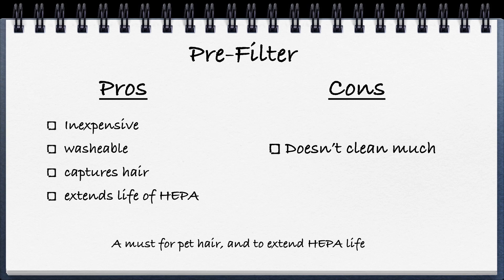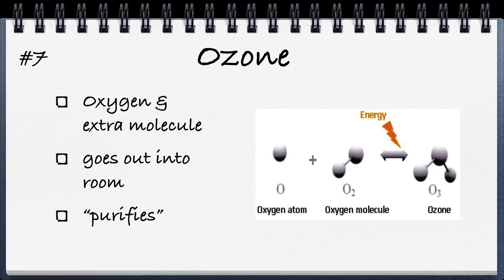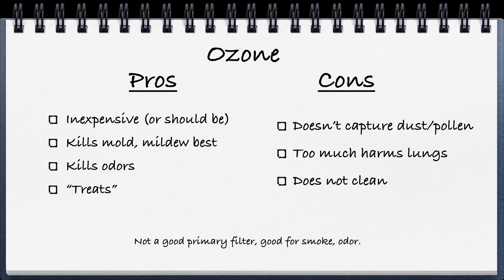Next is ozone — oxygen given an electrical charge, creating O3 instead of O2. Ozone goes out into the room from the purifier and treats the air. Pros: relatively inexpensive, kills mold and mildew better than anything, kills odor very well. Cons: doesn't capture dust or pollen; too much ozone can harm your lungs — I don't recommend it for anyone with sensitive lungs, as it can irritate or even trigger asthma. It treats but doesn't clean.